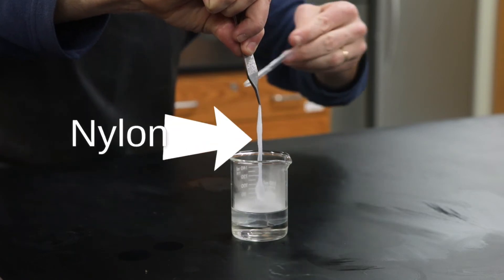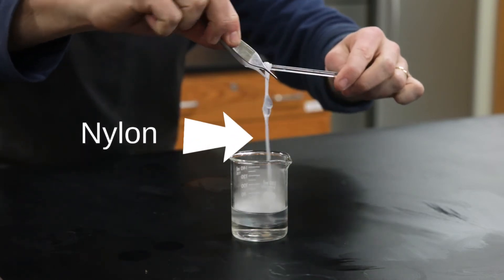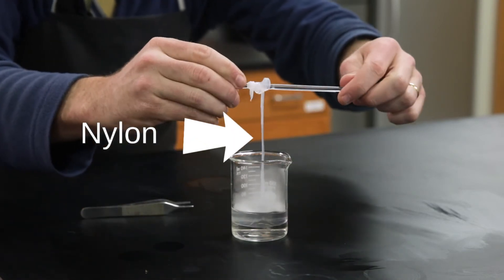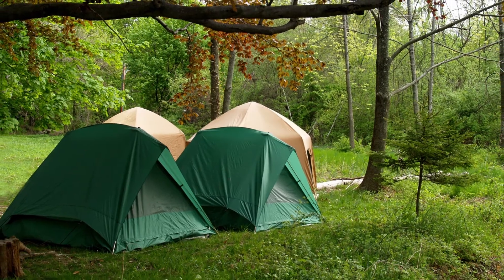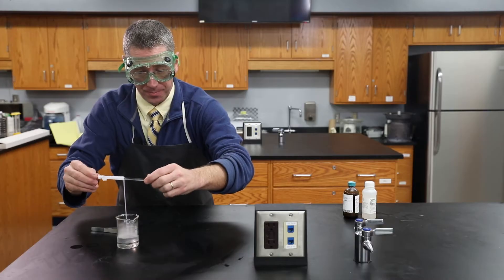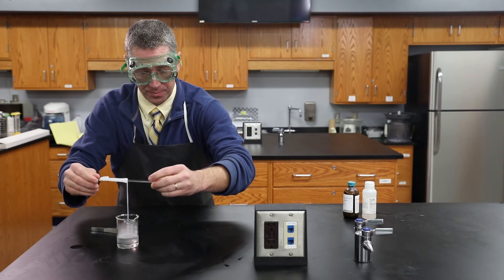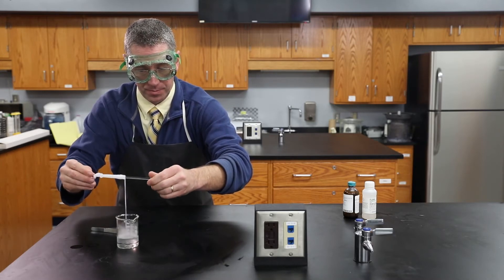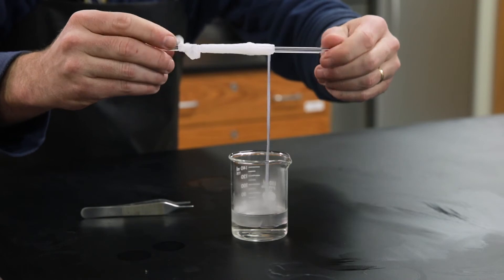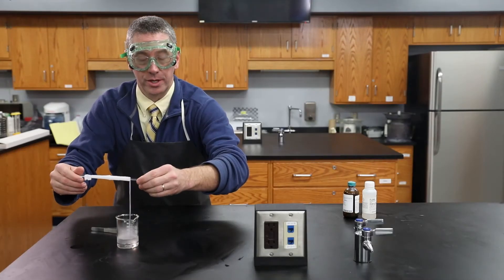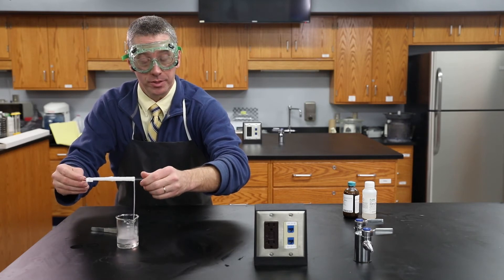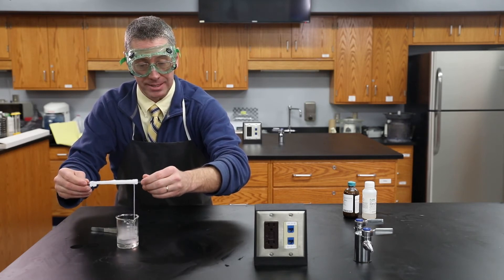Can you see the nylon that we've made? Now this is the same nylon that they make fabrics out of, tents. All you have to do is dry it, you can weave it into ropes, and you can generate an awful lot of nylon from just a few milliliters of the reactants.